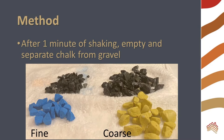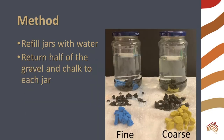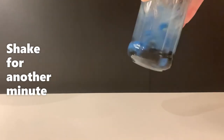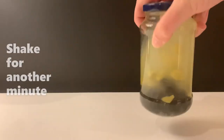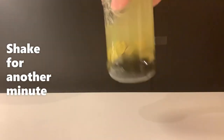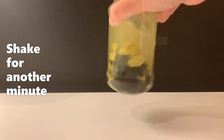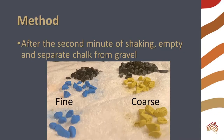Refill the jars. Return half of the gravel and half of the chalk to each jar. Shake each jar for another minute. After the second minute of shaking, once again separate the chalk from the gravel.